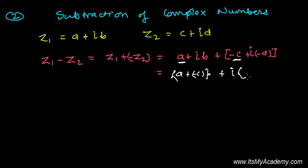So here it's B plus minus D. Finally, the subtraction Z1 minus Z2 gives us A minus C